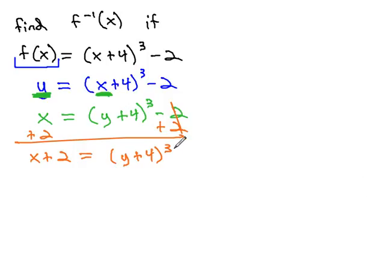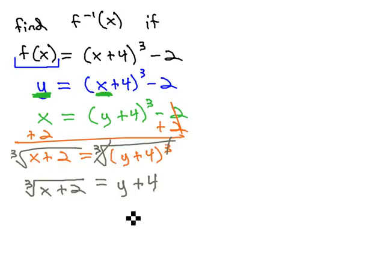Still trying to get at the y, we have to get rid of the exponent of 3. We get rid of a third exponent with a third root on both sides. Third exponent and third root undo each other, giving us y plus 4 on the right. And on the left, we have the third root of x plus 2.